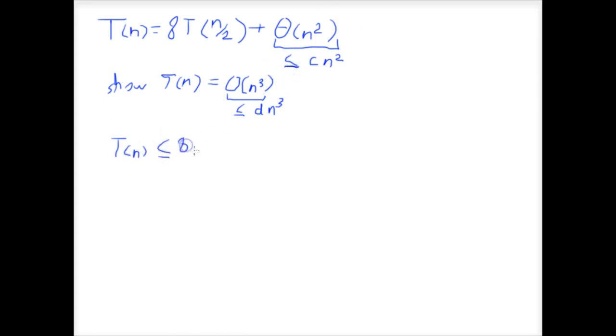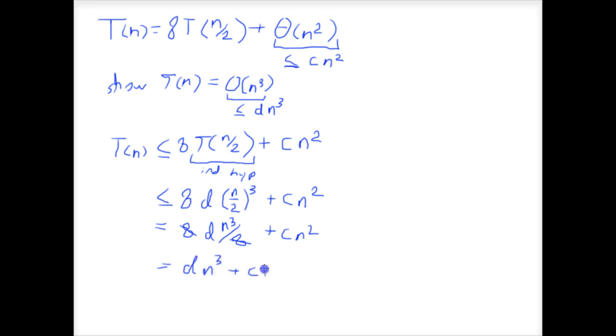Writing this out, we have T(n) ≤ 8T(n/2) + cn². And our inductive hypothesis says that that whole thing is going to be ≤ d(n/2)³ + cn². And that's a less than or equal to sign there. So we have 8d(n³/2³) + cn². 2³ is 8. We can cancel the 8s out. And that's equal to dn³ + cn².